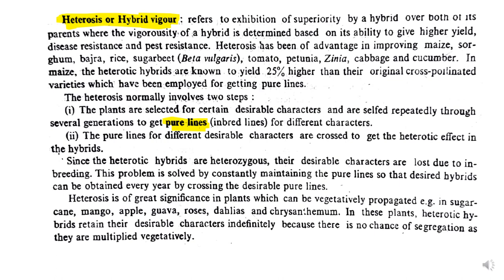Heterosis normally involves two steps: plants are selected for certain desirable characters, selfed repeatedly through several generations to form pure lines, and then hybridized to get the heterotic effect. Heterosis is of great significance in plants which can be vegetatively propagated — like sugarcane, mango, apple, and guava — because heterotic hybrids retain their desirable characters indefinitely, as there is no chance of segregation when multiplied vegetatively.